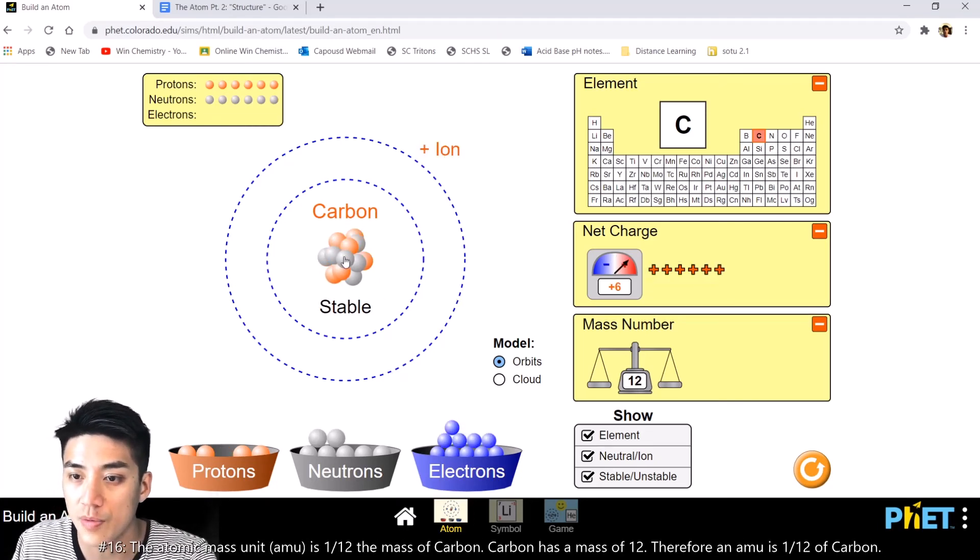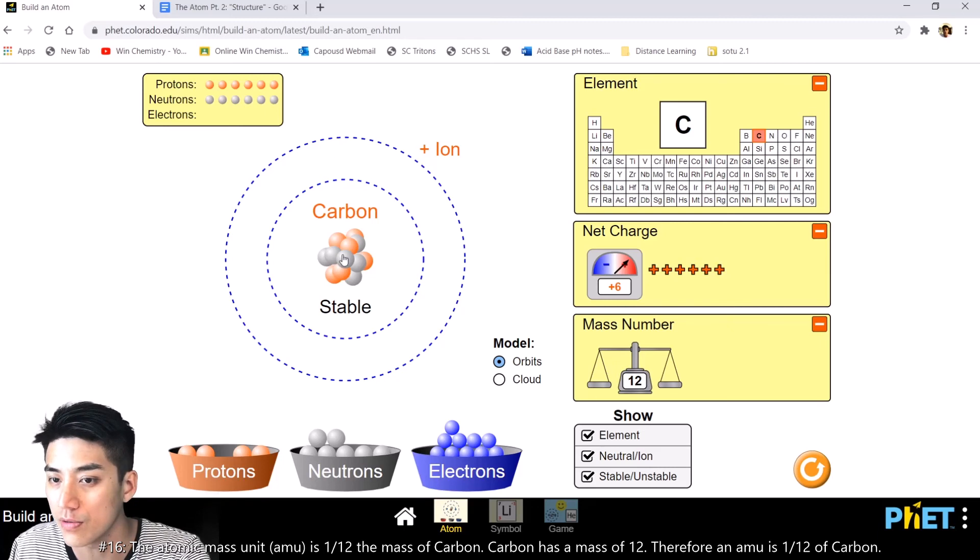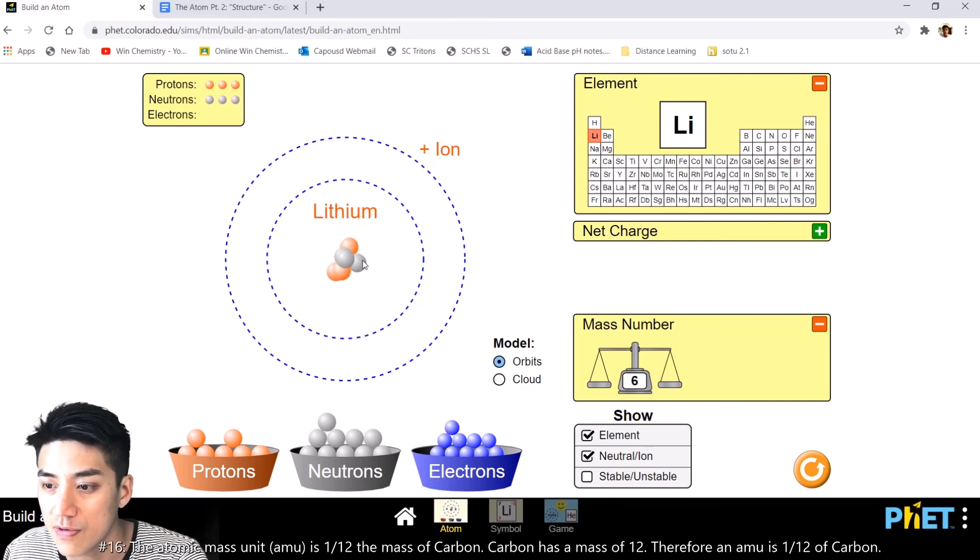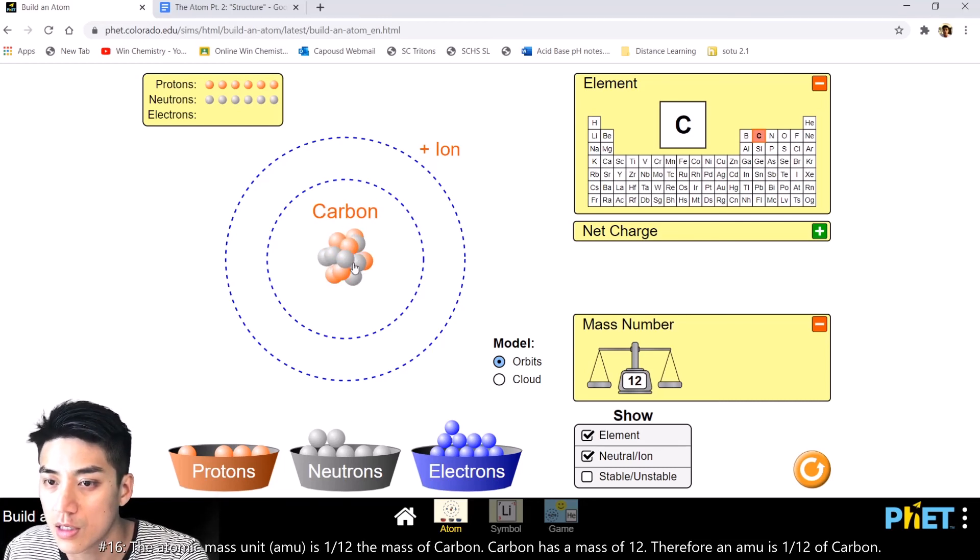It's also important to note that the atomic mass unit is one twelfth the mass of carbon. So because carbon has a mass of 12, and there are six protons and six neutrons, each with a mass of one, that just means the AMU is one twelfth the mass of carbon. And let me build it from the ground up so you can see we're at a mass of five, six, seven, eight. I'm just alternating protons and neutrons. Ten, eleven, and twelve. So once again, we've built carbon again. Six protons, six neutrons, a mass of 12.